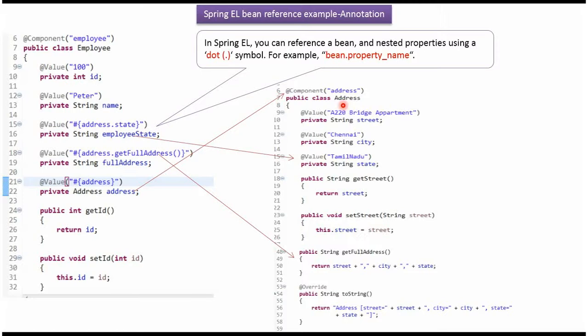Here I have defined the class Address. It has three properties: Street, City, and State. Street value will be injected as A220 Bridge Apartment, City value will be injected as Chennai, and State value will be injected as Tamil Nadu. It has getter and setter methods for these three properties.